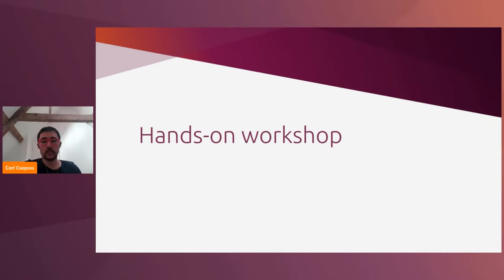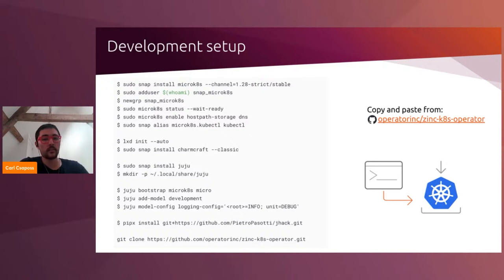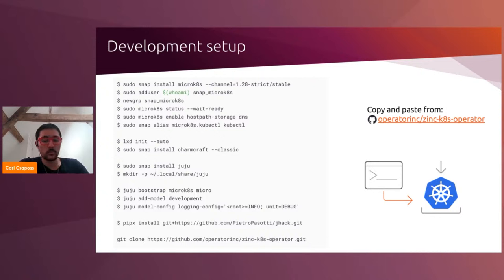Okay, so now we're going to jump to the hands-on section. Here are the instructions to set up your environment and install the software. They're available in the README of the GitHub repository we're using today. The link is in the chat and the description. If you run into any issues, please ask in the chat. We're installing MicroK8s, which is a lightweight Kubernetes that lets you run an entire Kubernetes cluster on your laptop. Then we're enabling a couple of add-ons for storage and DNS. Then we're installing Charmcraft, which is a build tool for charms. Next, we're installing Juju. This 'mkdir' command is a temporary workaround, so you won't have to run that in the future.